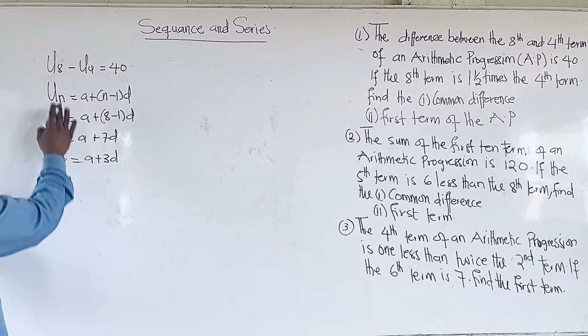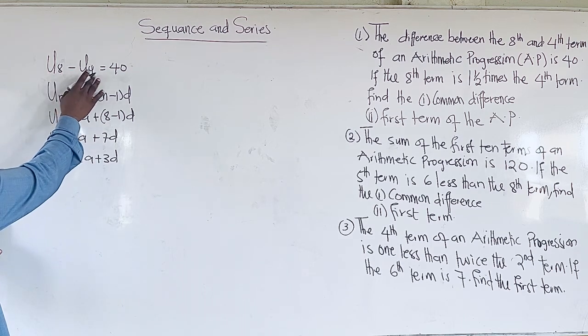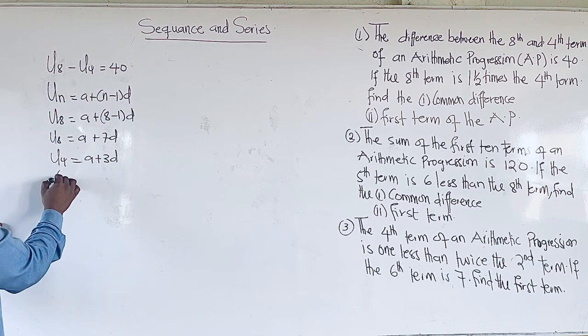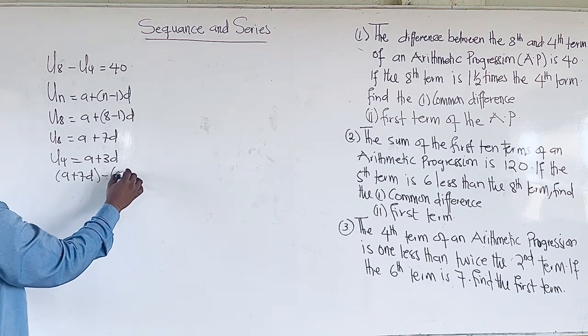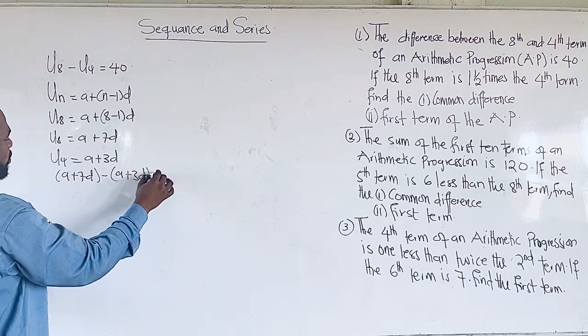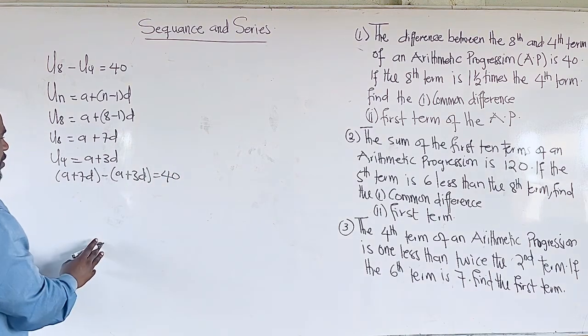So now the 8th term minus the 4th term will be 40. So we have A + 7D minus (A + 3D) should equal 40.